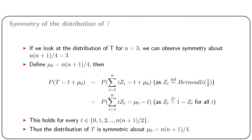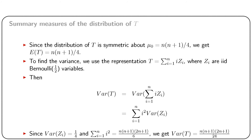Assume theta = 0. Then P(T = t + mu_0) = P(summation i from 1 to n of i·zi = t + mu_0). Since zi and 1 - zi have the same distribution, we can replace each zi by 1 - zi in the expression summation i from 1 to n of i·zi. Then a rearrangement expresses P(T = mu_0 + t) as P(T = mu_0 - t), and this holds for every t running from 0 to n(n+1)/2. Thus the distribution of T is symmetric about mu_0 = n(n+1)/4.